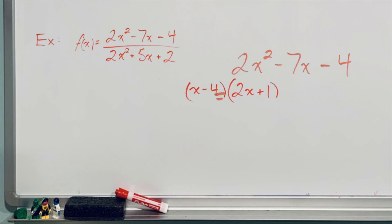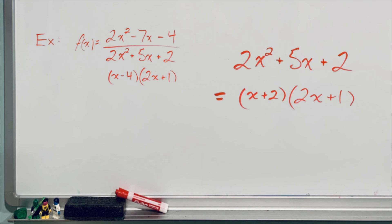So what I'm going to do is replace the numerator with my new factored expression. And I'm going to take that denominator, which is also a quadratic expression, and I'm going to apply trinomial factoring to rewrite that expression in factored form. Picking your favorite factoring strategy will result in x plus 2 times 2x plus 1.